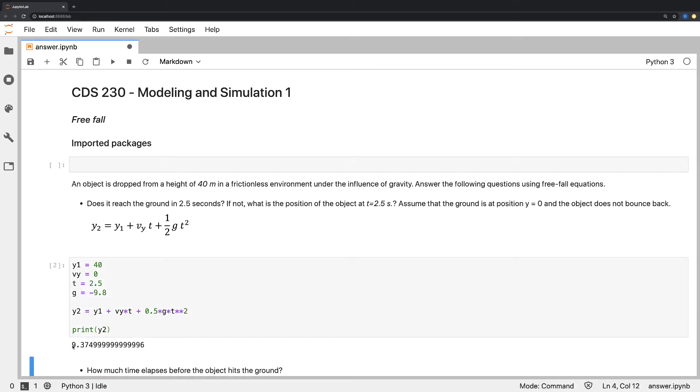The position of the object is about 9.3 meters from the ground. If this number was 0 or lower, we would say that the object reached the ground. Since this is greater than 0, it means it hasn't reached the ground yet.